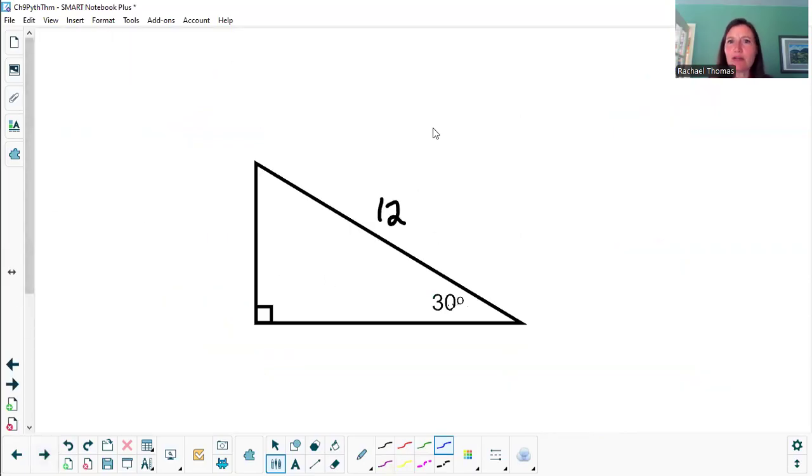Let's do a couple more examples. So in this one, I'm actually given the longest leg, or the hypotenuse, the longest side. So I kind of have to reverse engineer a little bit. If 12 is 2x, then what was x?